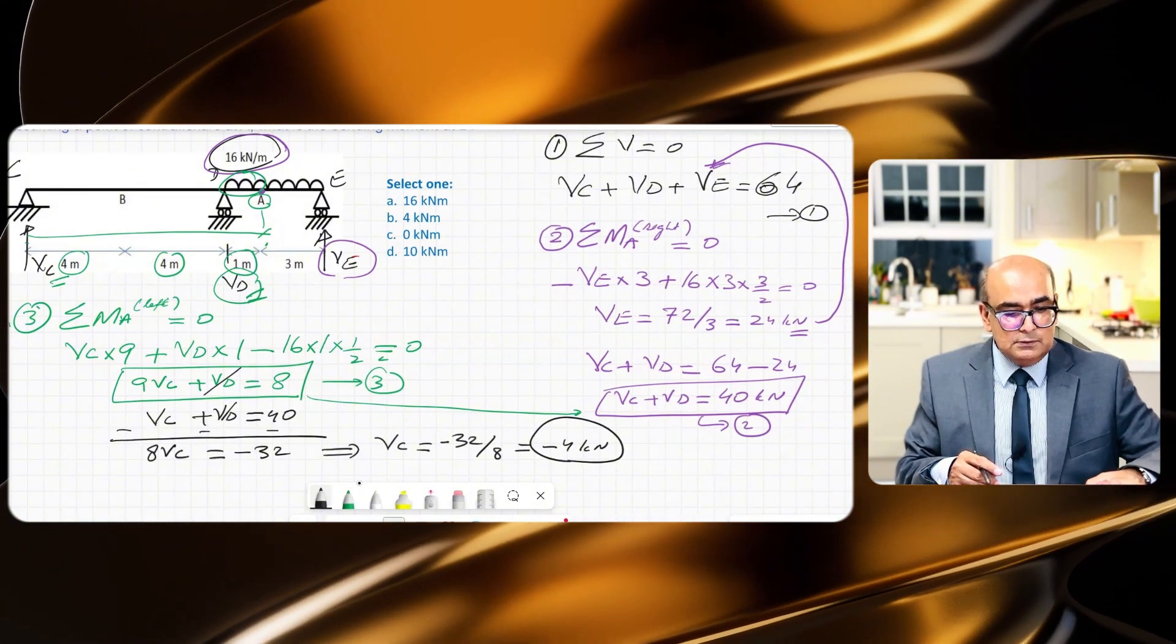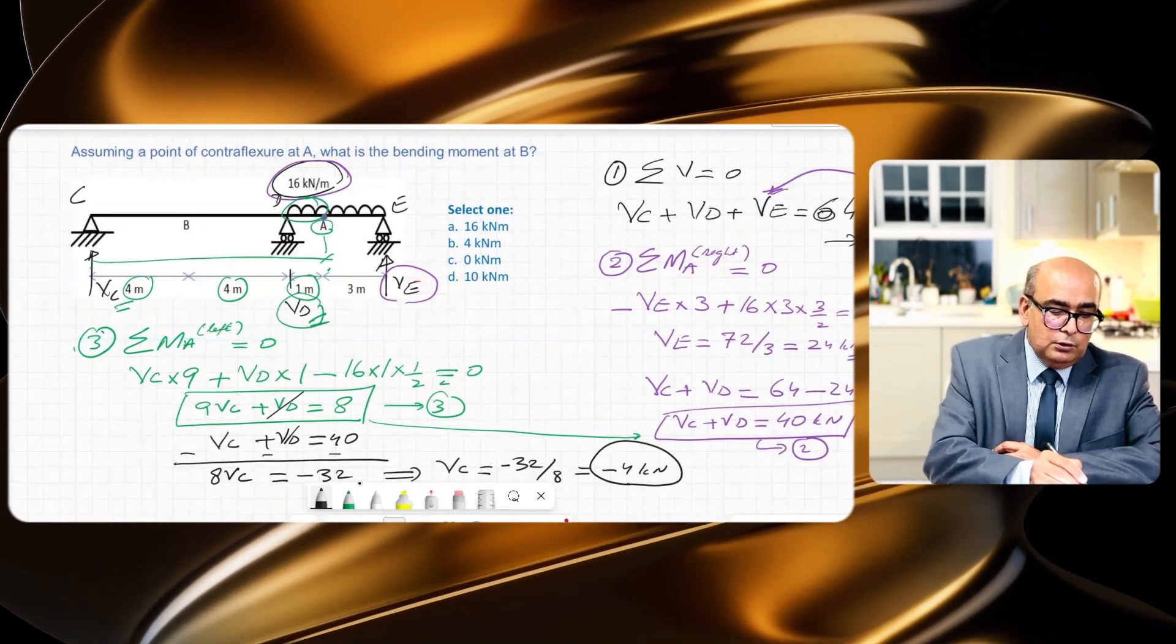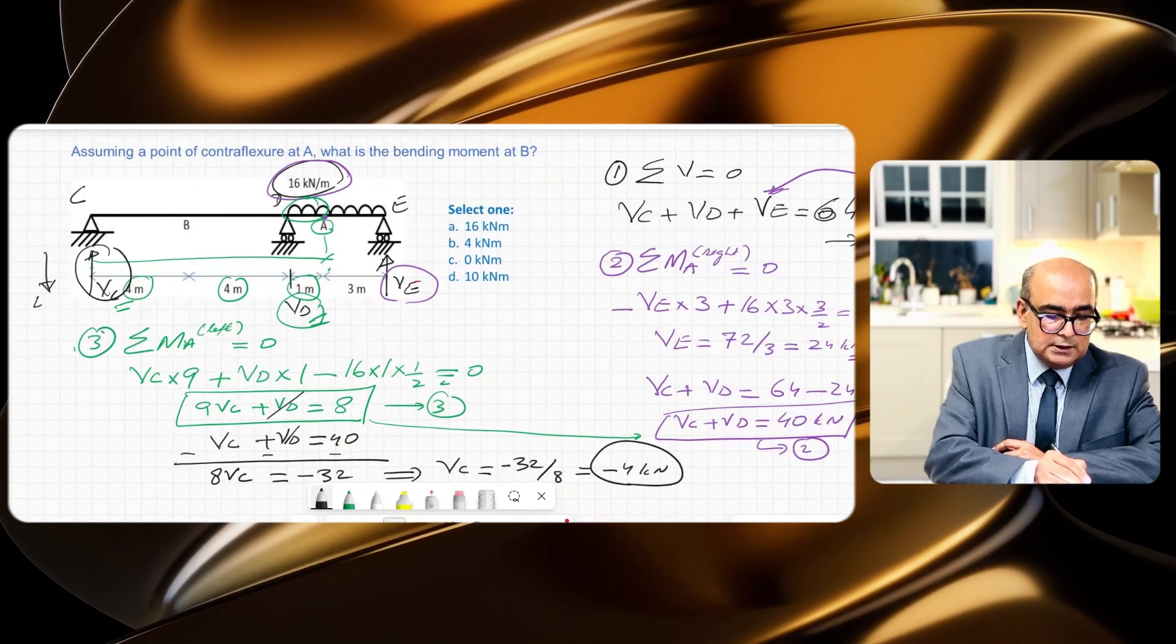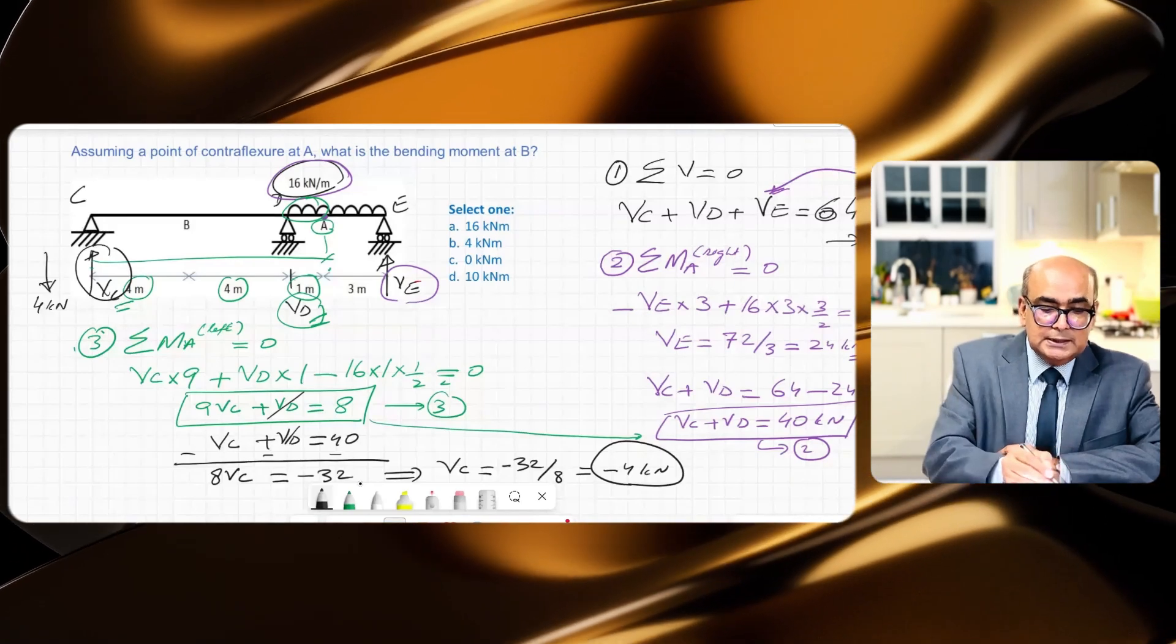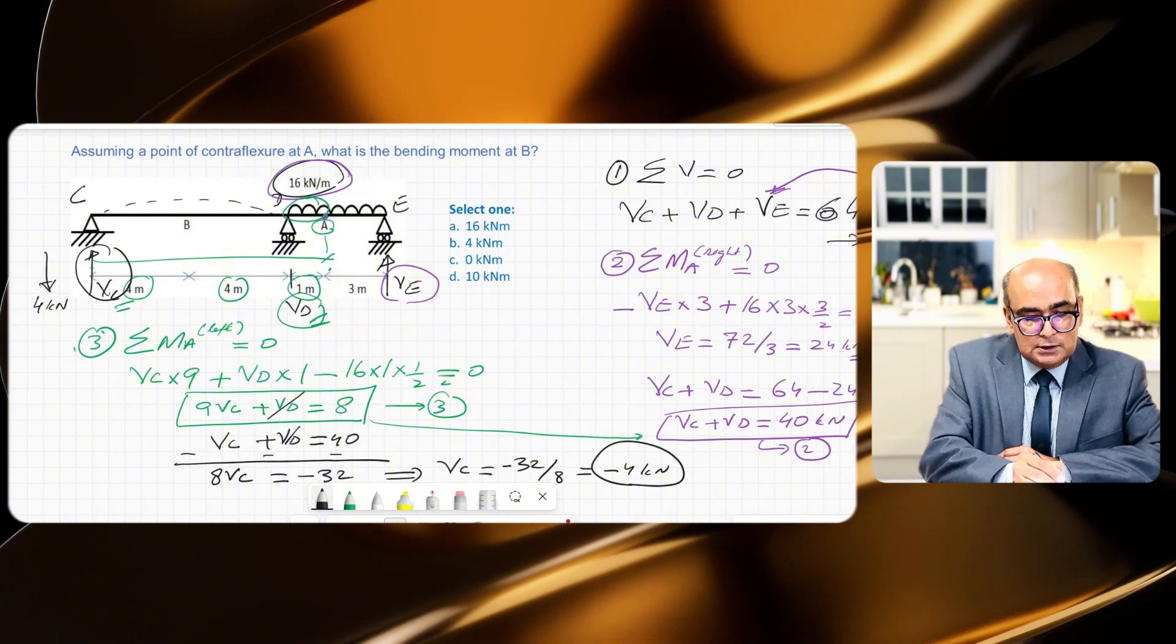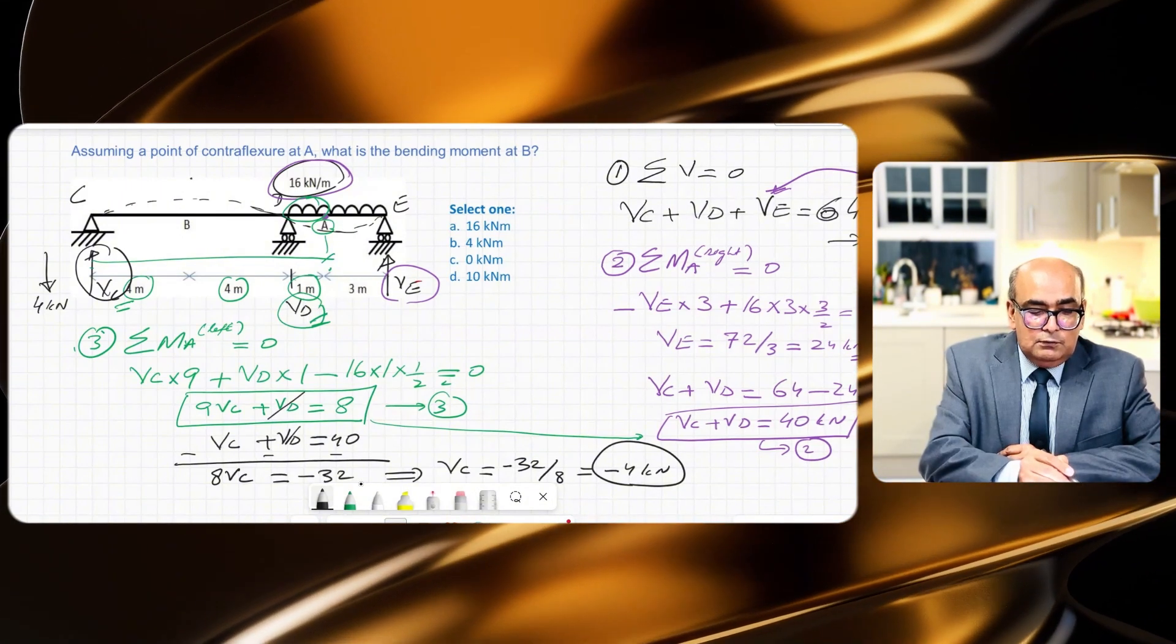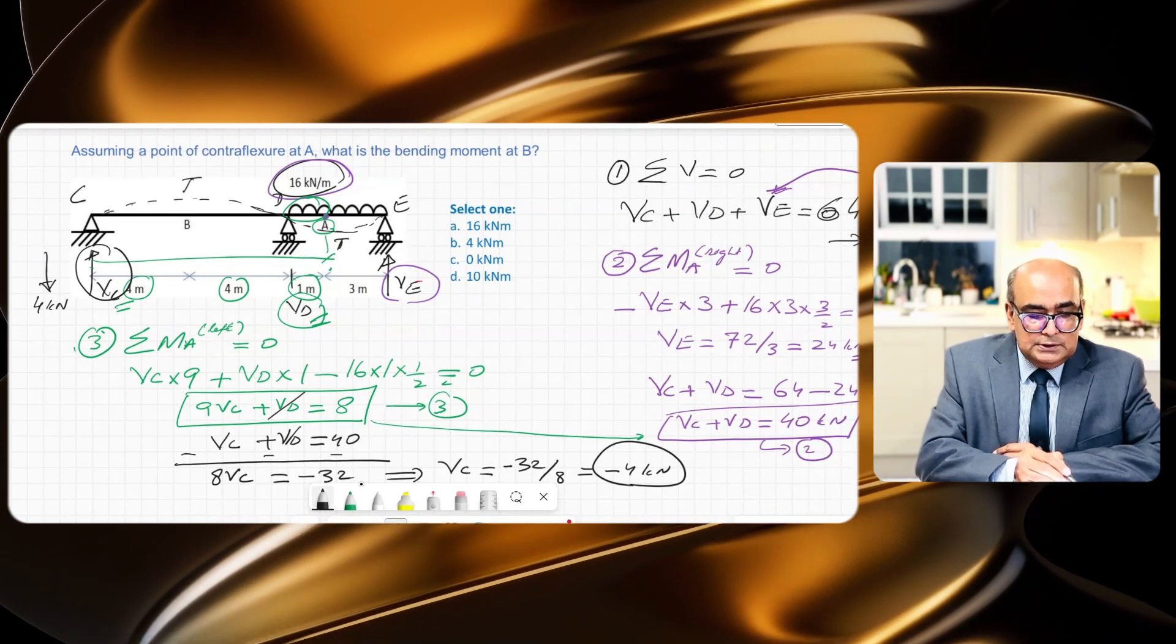Now note that we have a negative reaction here, so negative reaction means that it will go down. So now we have all reactions. This VC is a downward reaction, that is 4 kilonewtons. And which makes sense because if you draw the deflected shape of this structure it would be like this.